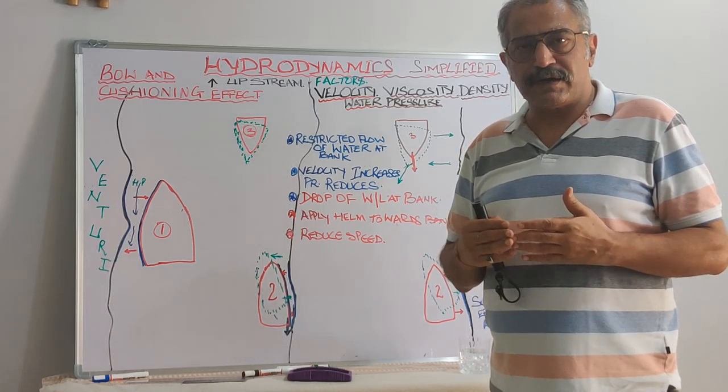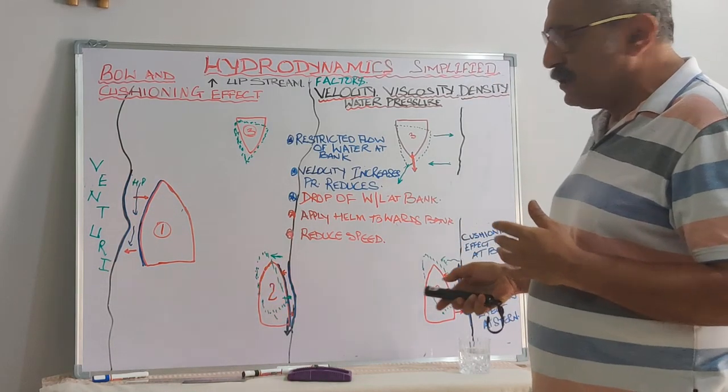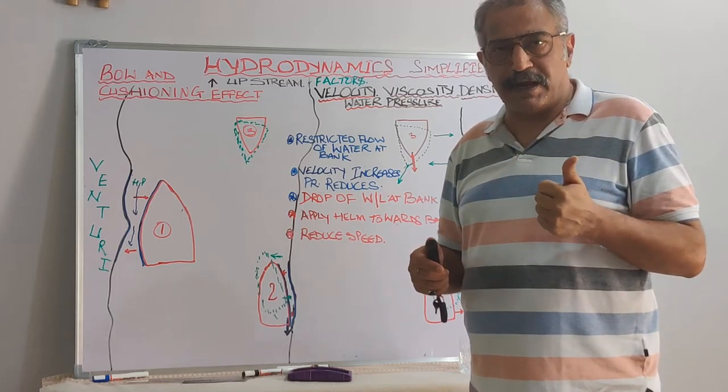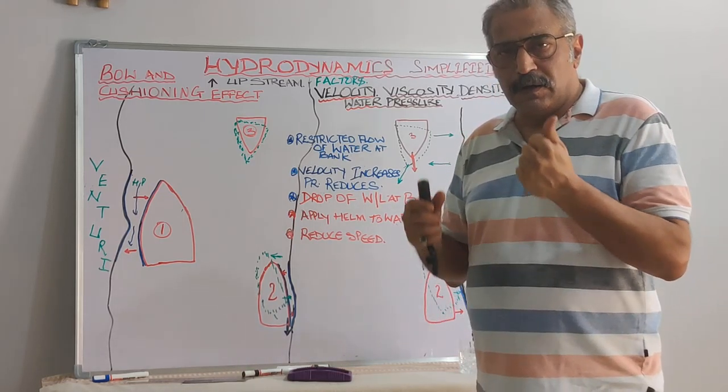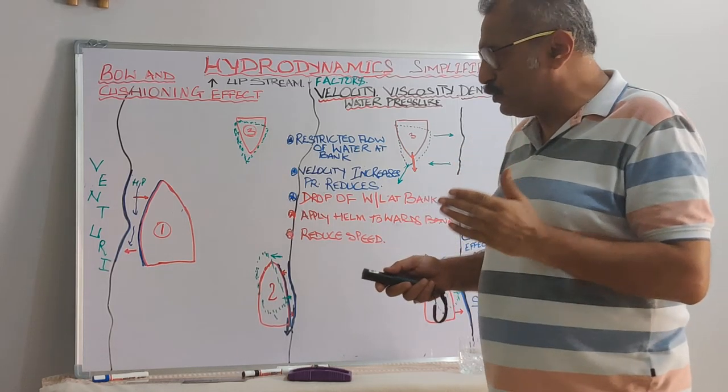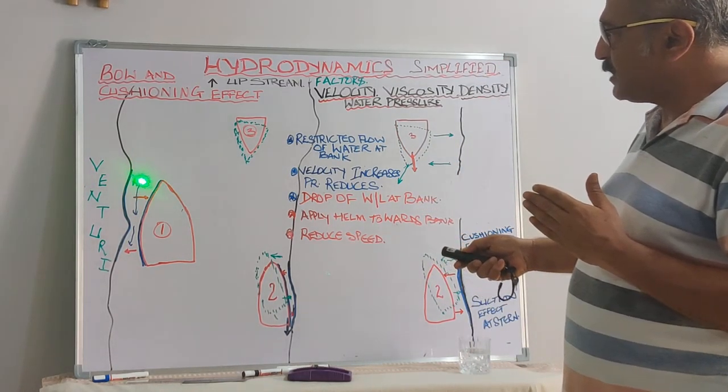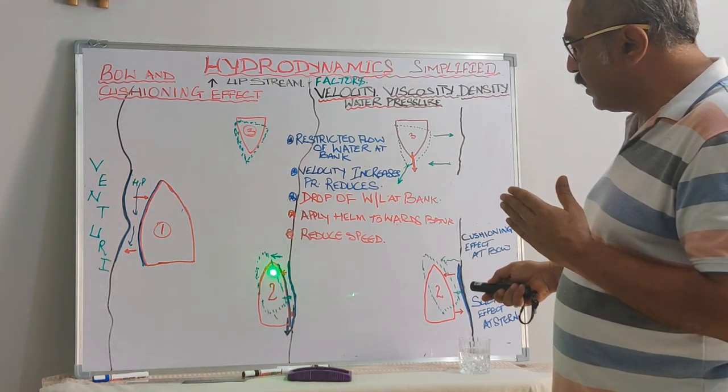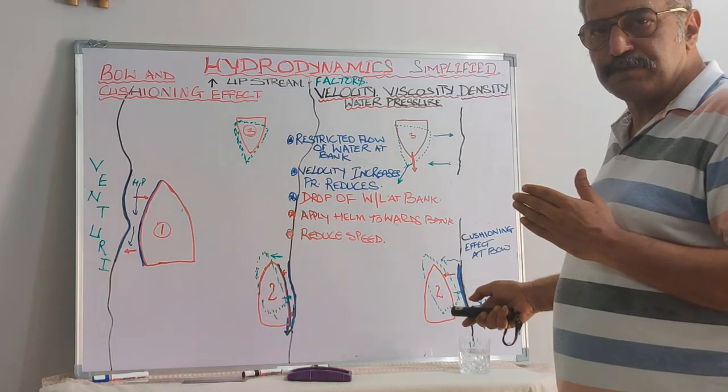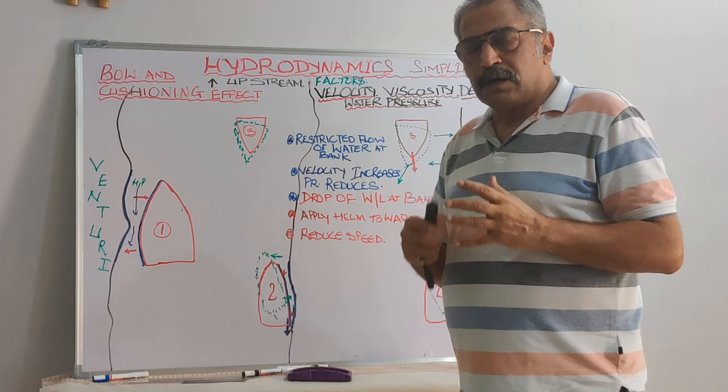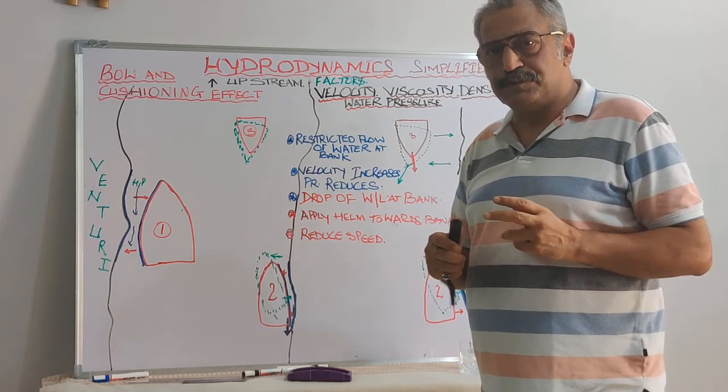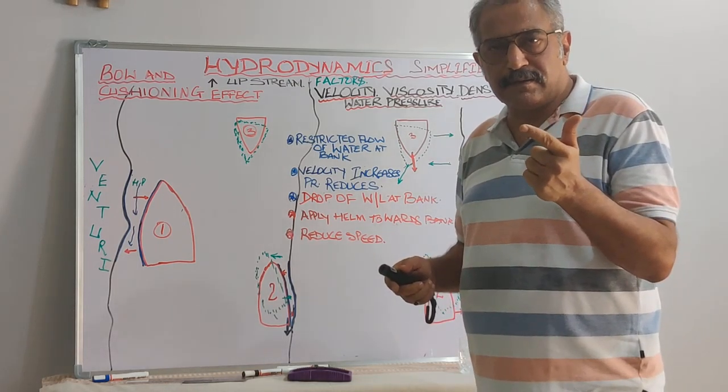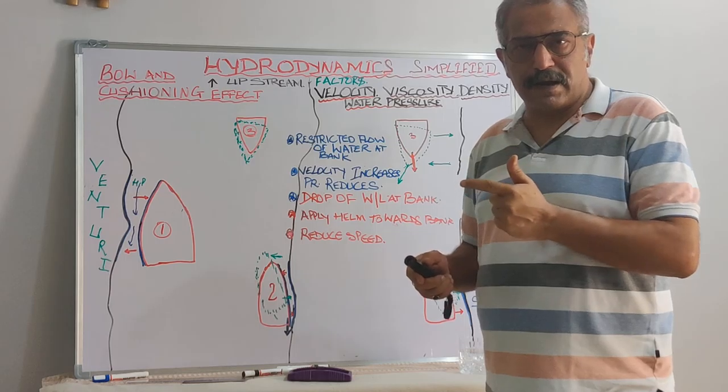The things what we have under control in this case: number one is to reduce the speed because the speed factor is the main. Once the speed is reduced and the helm is given towards the bank, like in this case the helm has to be given to port to pull the stern out, in this case the helm has to be given to starboard to pull the stern out.